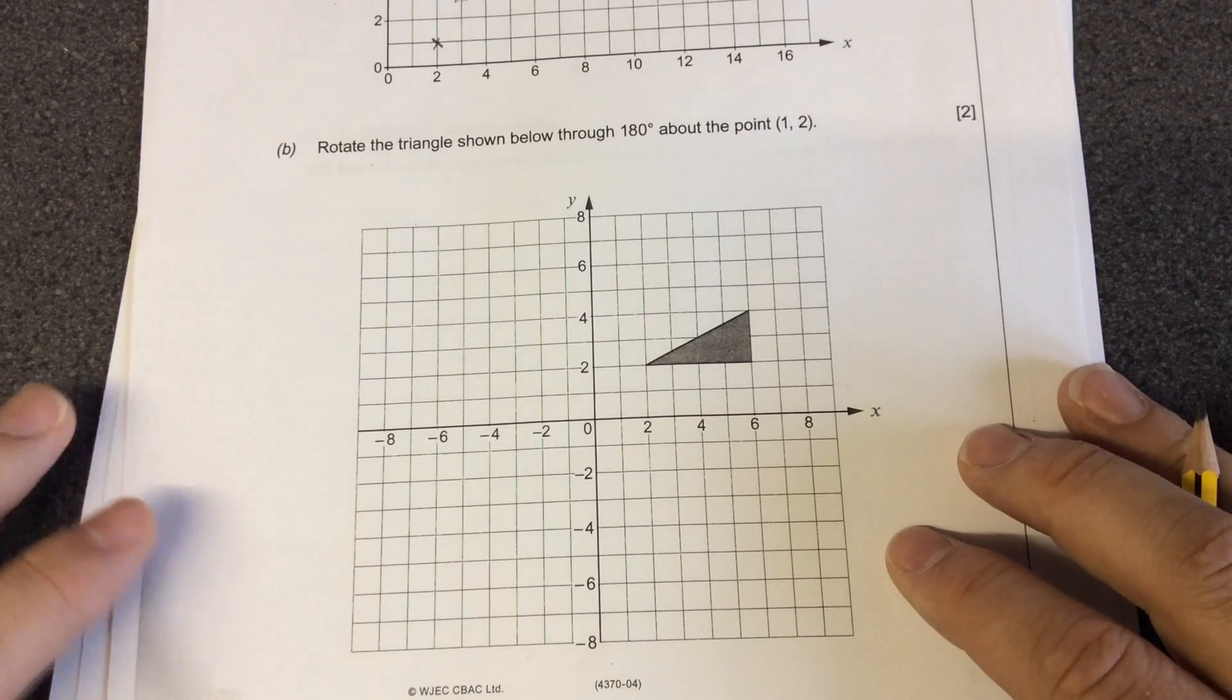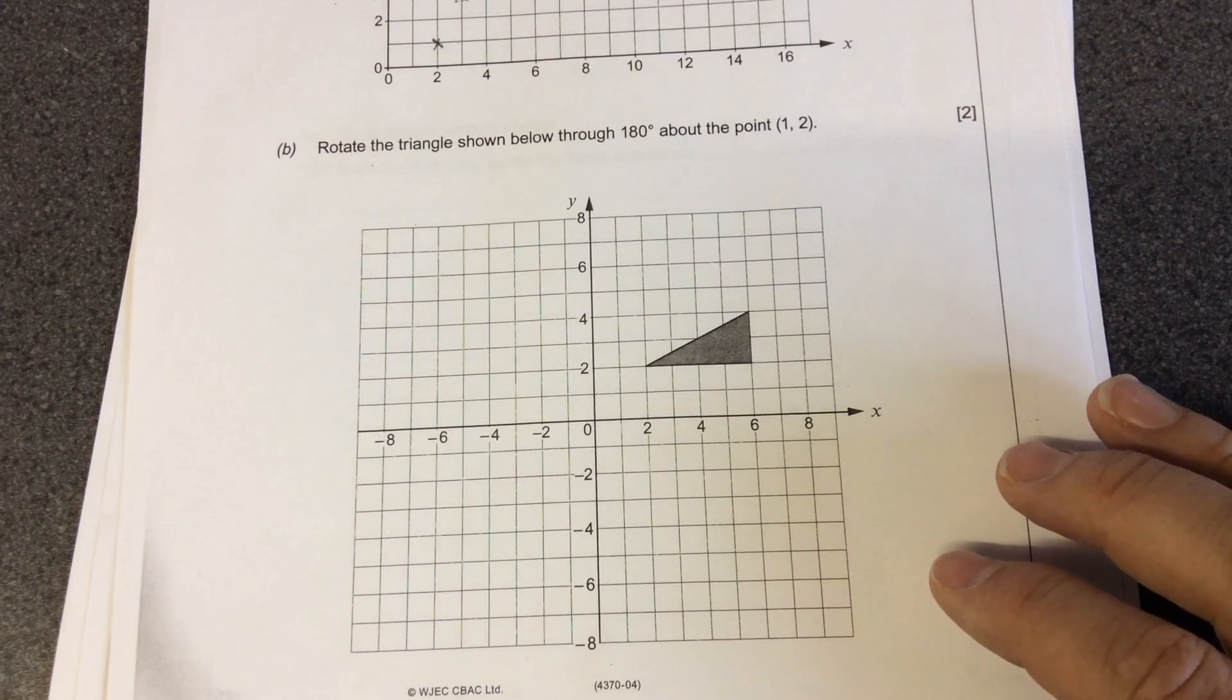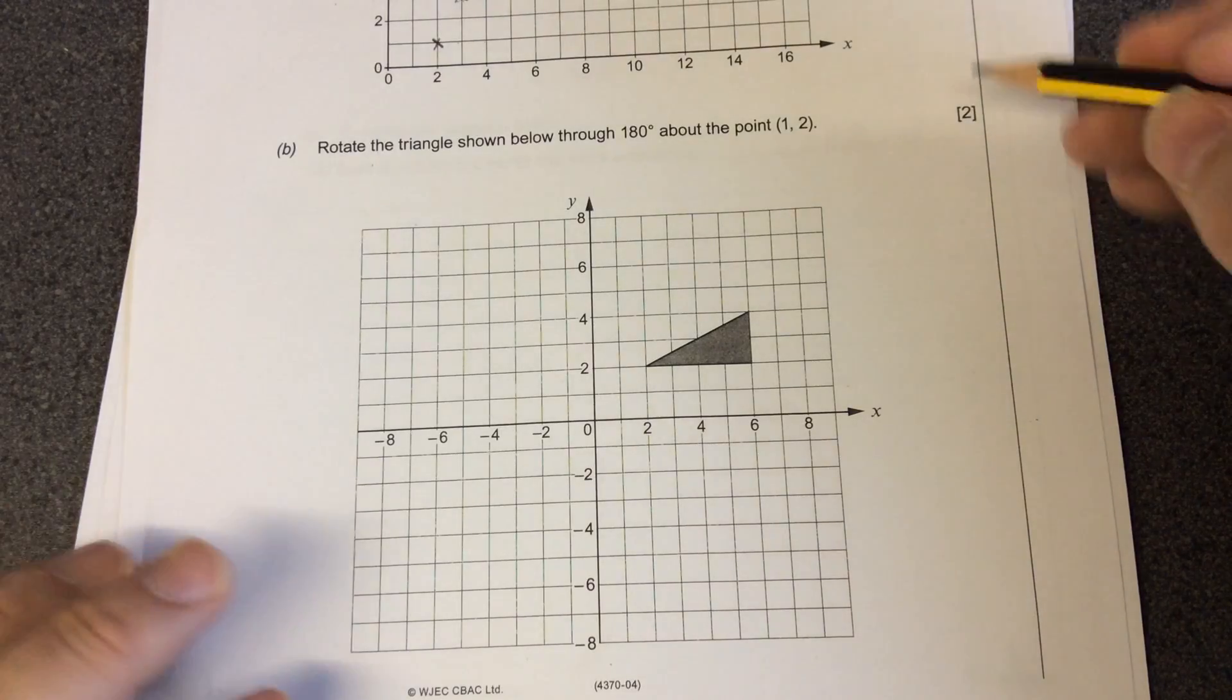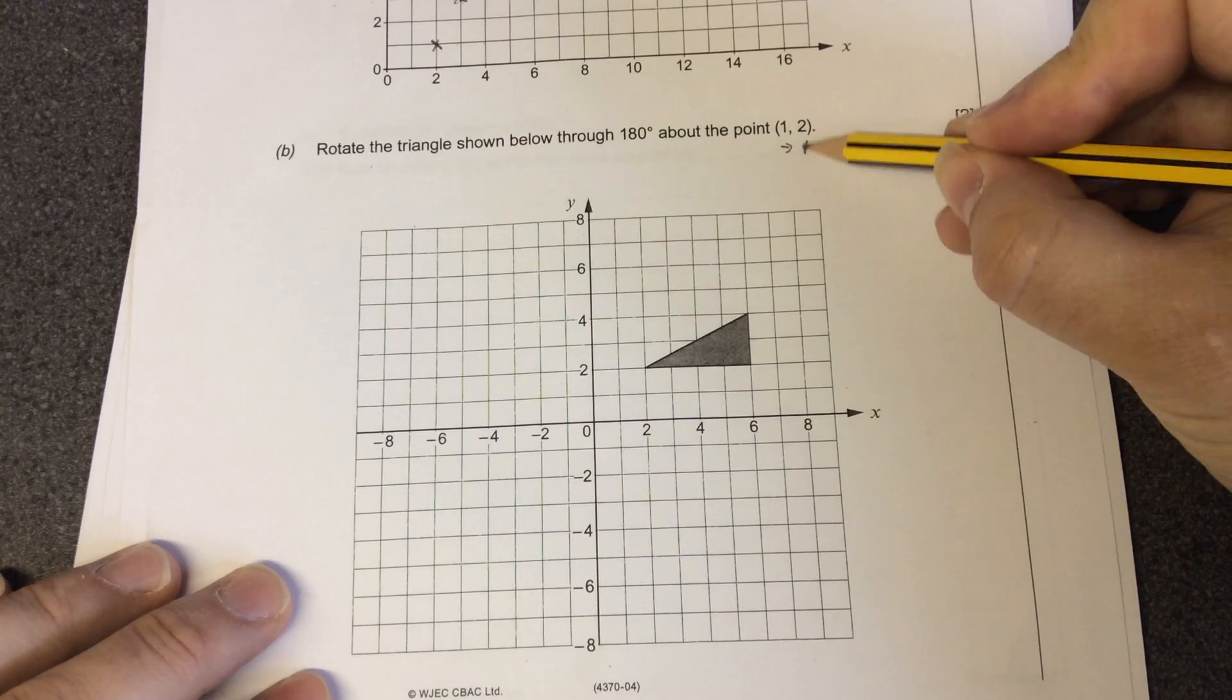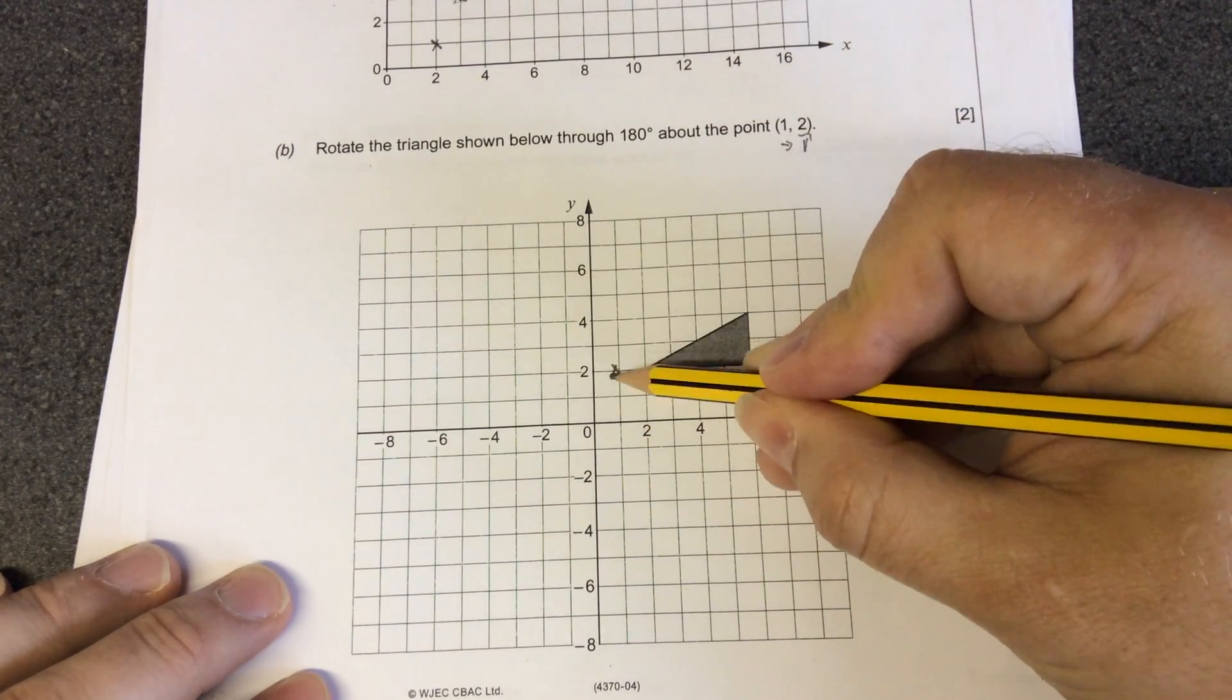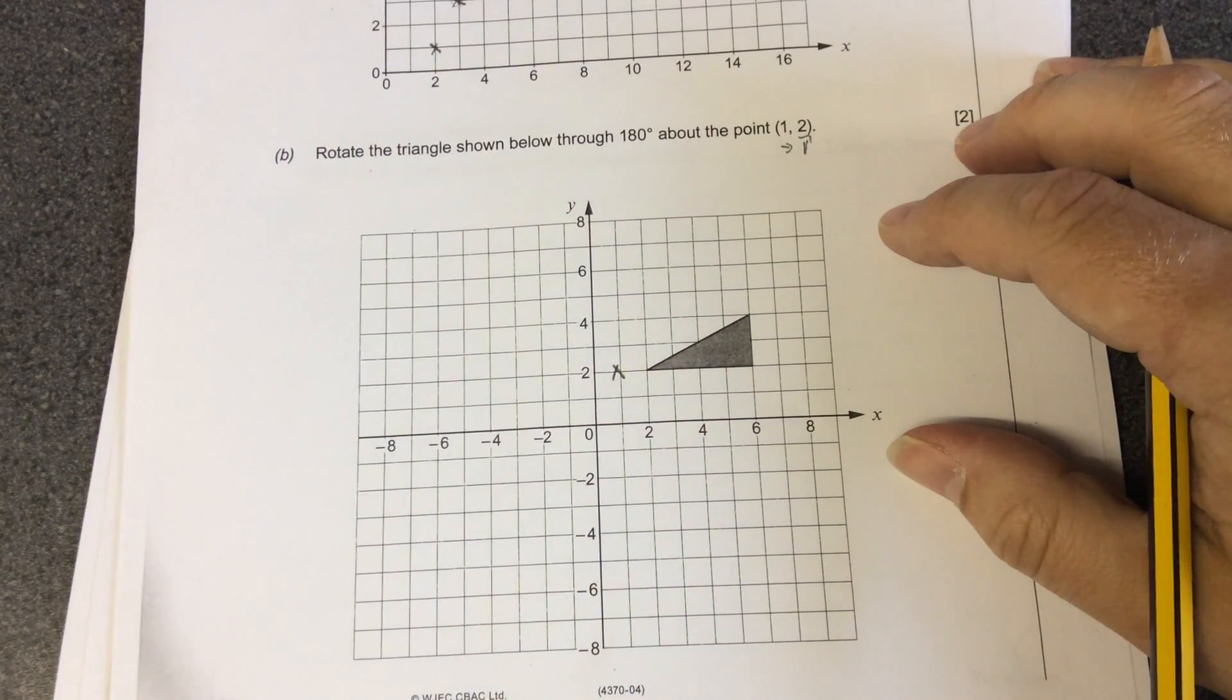Rotation means twist. So when you're rotating 180 degrees, a full turn is 360. So 180 degrees would be half a turn. You go to the coordinate. This time, it's across 1 and up 2. So across 1, up 2. And that becomes our point of rotation.